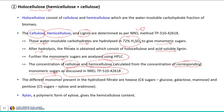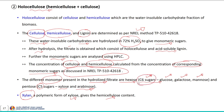The different monomers present in the hydrolyzed filtrate are hexose sugars, that is C6 sugars, consisting of glucose, galactose, and mannose. Pentose sugars, known as C5 sugars, mostly include xylose and arabinose. Xylan, a polymer form of xylose, gives the hemicellulose content in the given sample, and glucose, a C6 sugar, gives the cellulose content in the given biomass sample.